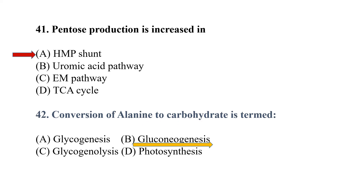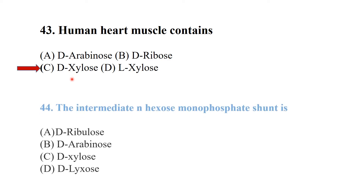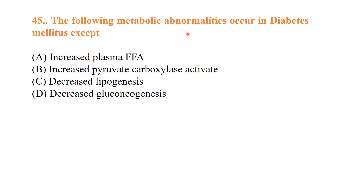The process of gluconeogenesis mainly occurs in the liver. The human heart muscle contains deoxyribose. The intermediate in the hexose monophosphate shunt is deoxyribose. In diabetes mellitus, increased plasma fatty acids and increased pyruvate carboxylase activity occur, but certain changes do not occur.